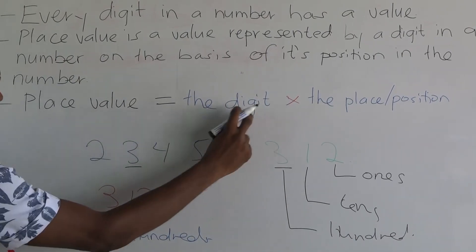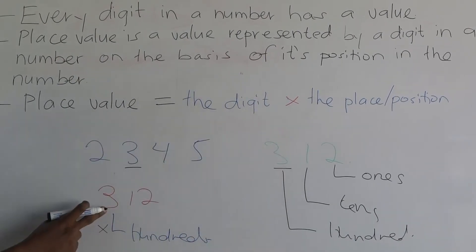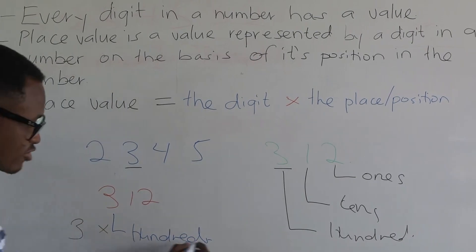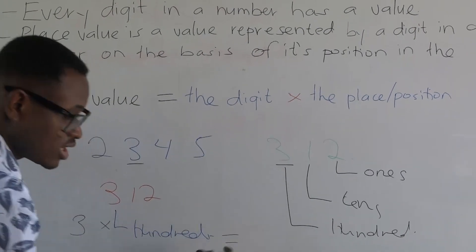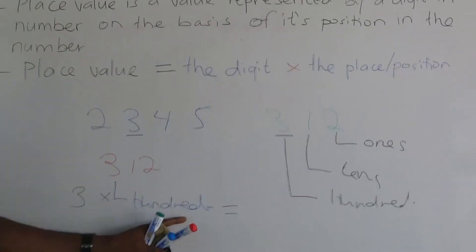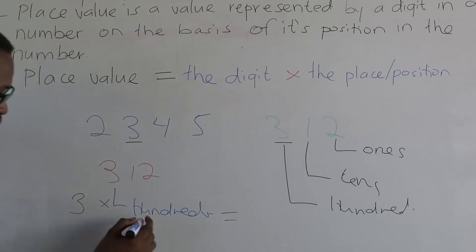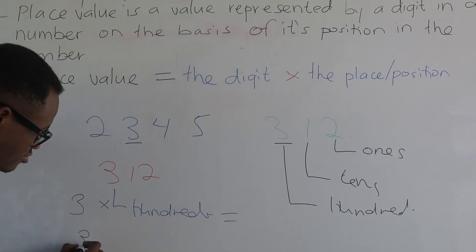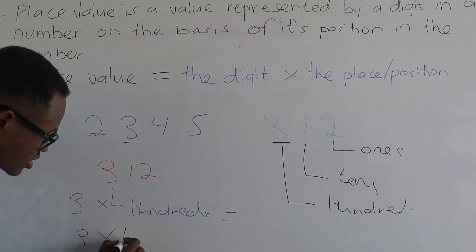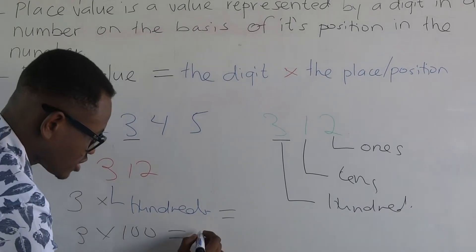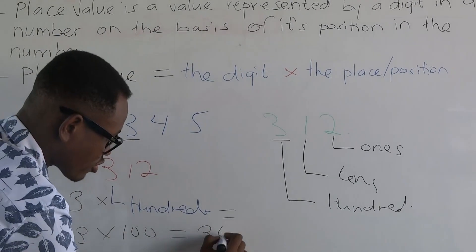Multiply by the digit three. Hundreds means one hundred, so that gives you three times one hundred, giving you three hundred.